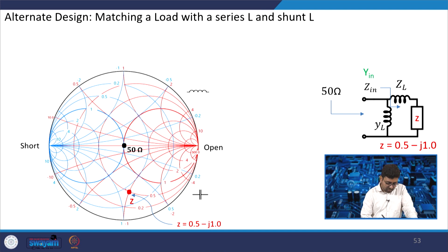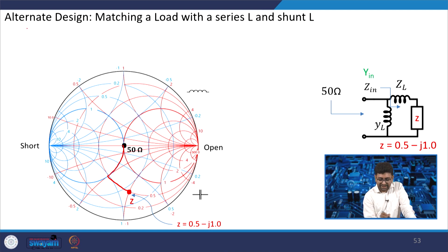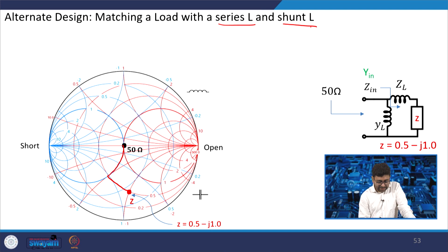You can also move up on the Z plane — that means adding an inductor in series — and then add another inductor in parallel. So there is an alternate design: a series inductor and a shunt inductor. That is the alternate design.